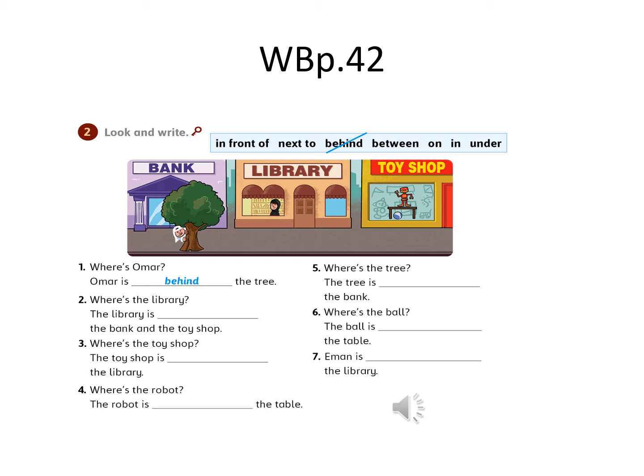Look at number 1. Where is Omar? Omar is behind the tree. Look at the pictures — what can you see? There is a bank, a library, a toy shop. Now please stop the video, answer the questions, then come back to check your answers.